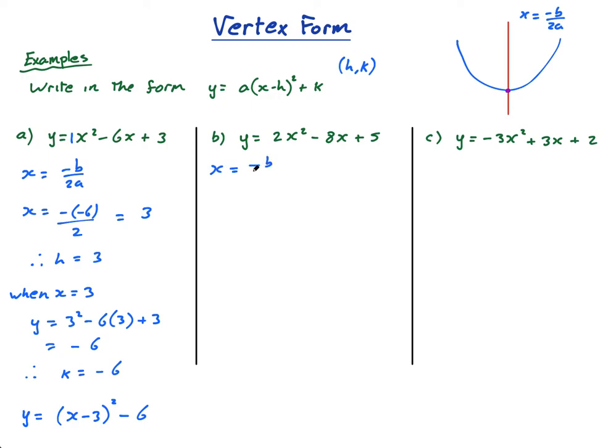So we're going to do the same thing, negative b over 2a. X equals negative b, that would be negative negative 8, over 2a, which is 4. 8 over 4 is 2, therefore h equals 2. When x equals 2, y equals 2 times 2 squared minus 8 times 2 plus 5, which is 2 squared is 4, times 2 is 8. 8 minus 16 is negative 8, plus 5 is negative 3.